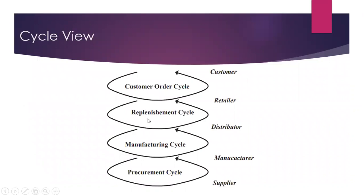This is the Cycle View of Supply Chain. It comprises at least four cycles, and these cycles are in between various facilities or stations. At the interface of Customer and Retailer, there is Customer Order Cycle. At the interface of Retailer and Distributor, there is Replenishment Cycle.